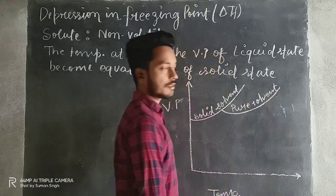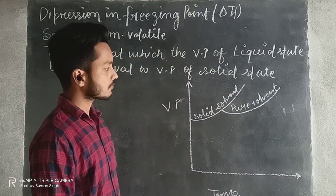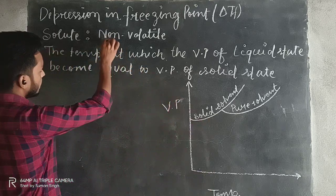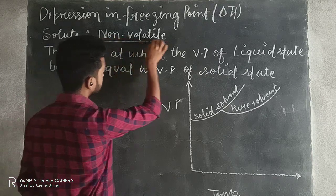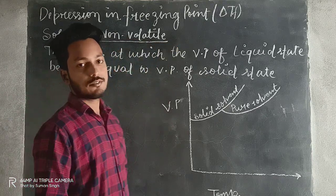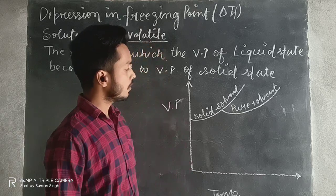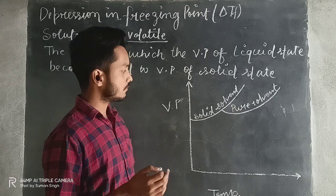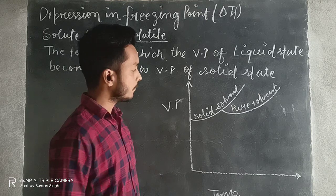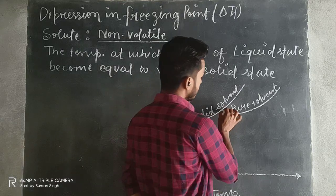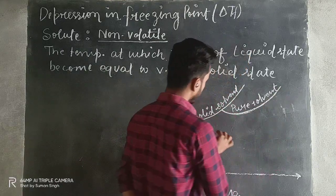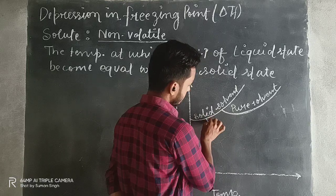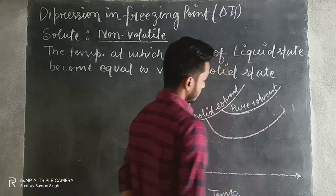The pure solvent curve looks something like this. Now, when we have added a non-volatile solute, the freezing point will decrease. When we have added the non-volatile solute, the freezing point will decrease and the graph of the solution will be somewhat in this lower position.